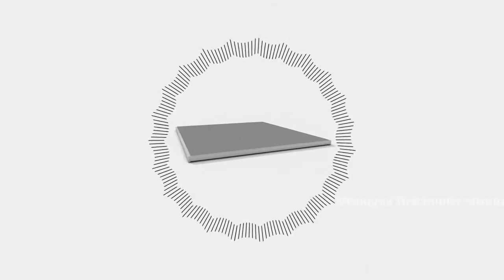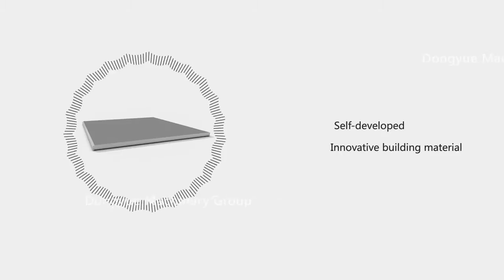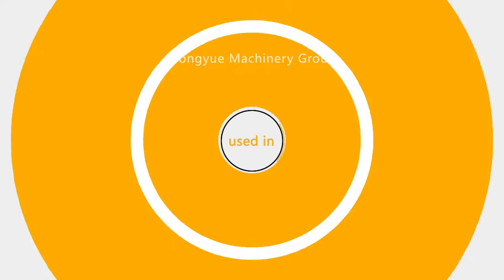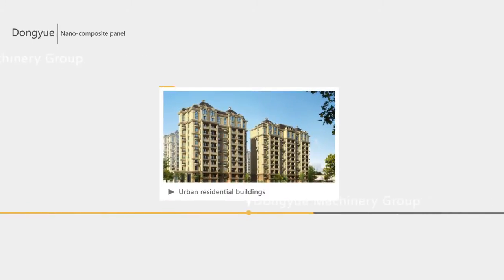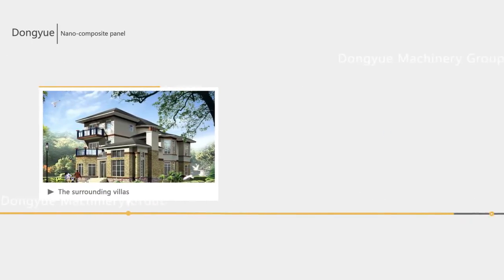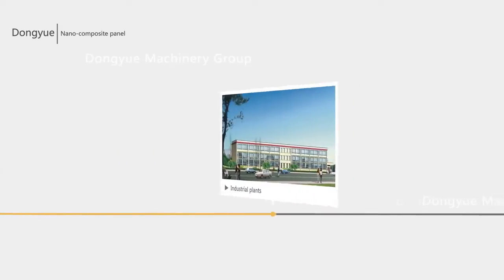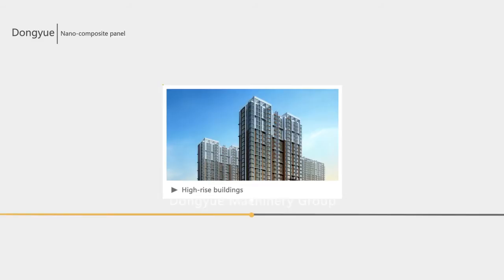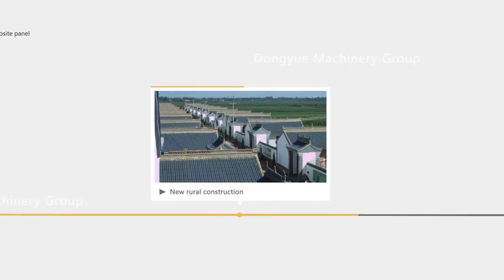Nanocomposite panel is an innovative building material self-developed by Dongyue Machinery Group Company Ltd. It can be widely used in urban residential buildings and surrounding villas, energy-saving renovation of old buildings, industrial plants, high-rise buildings, and new rural construction areas.